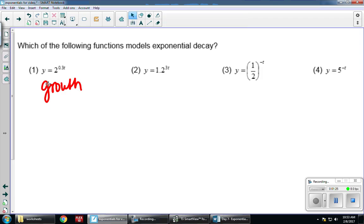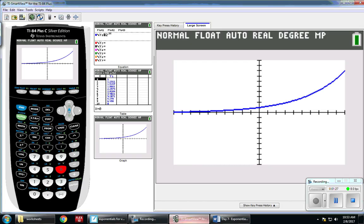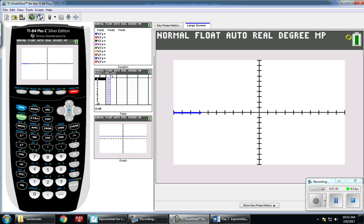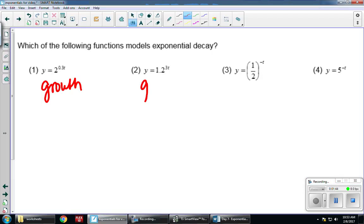Now I'm going to put in 1.2 to the 3t. I'm going to go back, clear it out, 1.2 to the 3x power, and take a look at my graph again. This one is increasing as well, at a slow rate, but it's still increasing. So that's not it, because this is growth.